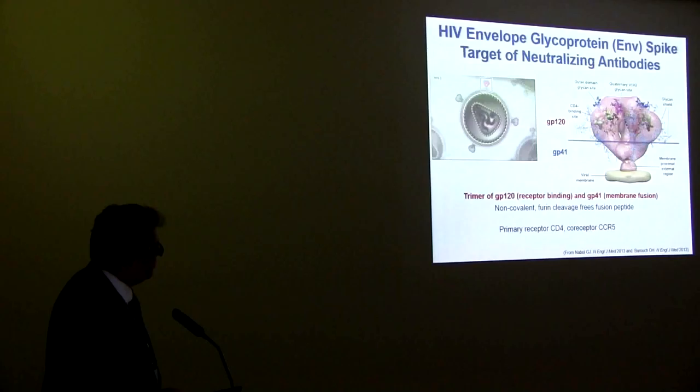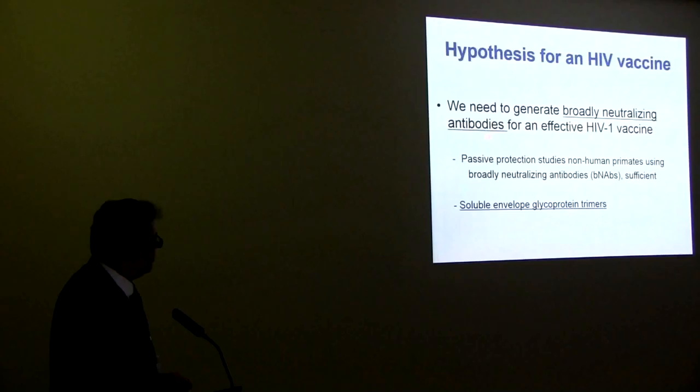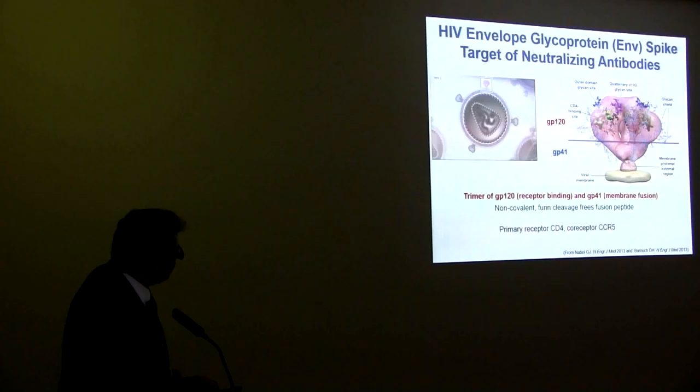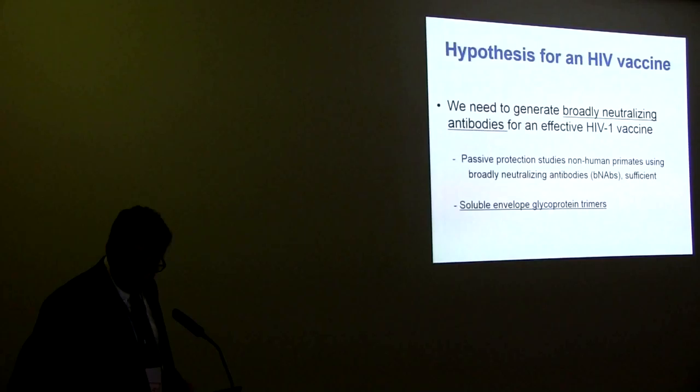For the purposes of this talk, we don't really need to go into details. There's a CD4 binding site on GP120, each of the three monomers that binds to the primary receptor, CD4. And there's also a co-receptor binding site. This is an attractive target because we make a lot of antibodies against this site.